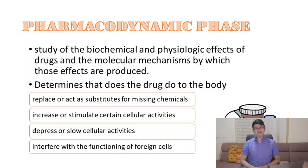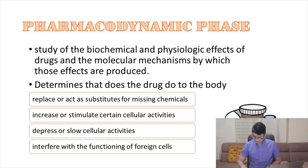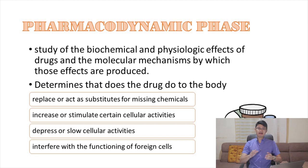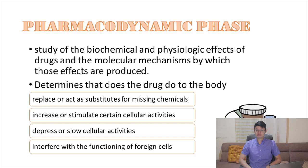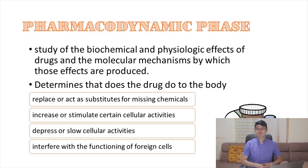Now that we know the pharmaceutical phase and the pharmacokinetic phase, we will move on to the last concept: the pharmacodynamic phase. If pharmacokinetic phase determines how medication is moving through your body, pharmacodynamic phase is the study of biochemical and physiologic effects of drugs and their molecular mechanisms by which those effects are produced. Pharmacodynamics can be divided into pharmacon — drugs — and dynamos — power. This determines the power of medication on how it affects your body, answering: what does the drug do to the body?